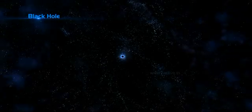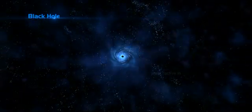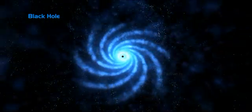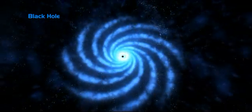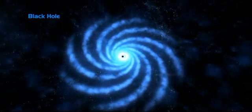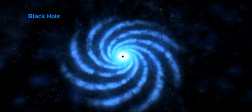Black Hole: If the mass of the original star is very large, say 10 times or more than the sun, even neutrons collapse further and a black hole is formed.